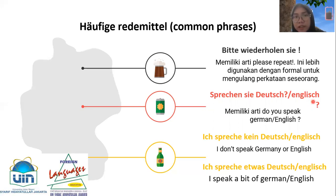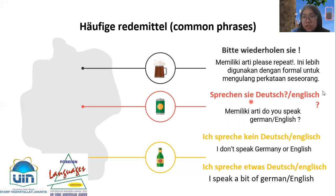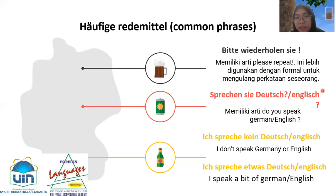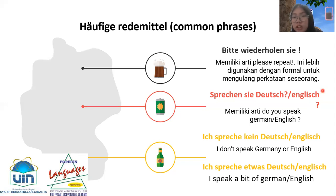Next, for common phrases used to ask what language someone speaks: 'Sprechen Sie Deutsch?' or 'Sprechen Sie Englisch?' meaning 'do you speak German?' or 'do you speak English?' If we can't speak German, we can say 'Ich spreche kein Deutsch', or 'Ich spreche kein Englisch', meaning 'I don't speak German' or 'I don't speak English'.